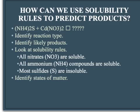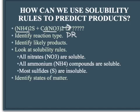Here's an example reaction: we have (NH₄)₂S — ammonium sulfide — plus cadmium nitrate, and we're asking what the likely products of this reaction are and whether they'll be soluble or insoluble. The first thing we need to do is identify our reaction type. We're dealing with a double replacement reaction — compound plus compound. There's no oxygen present so it's not combustion, and it can't be synthesis, decomposition, or single replacement, so we're left with double replacement.